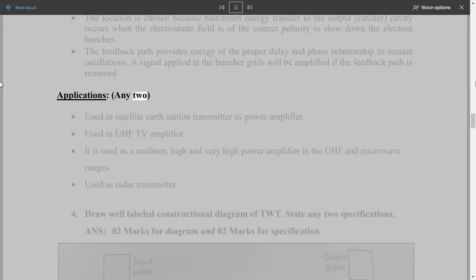The buncher grids are connected to a cavity resonator that superimposes an AC potential on the DC voltage. AC potentials are produced by oscillations within the cavity that begin spontaneously when the tube is energized. The initial oscillations are caused by random fields and circuit imbalances that are present when the circuit is energized. The oscillations within the cavity produce an oscillating electrostatic field between the buncher grids that is at the same frequency as the natural frequency of the cavity. The direction of the field changes with the frequency of the cavity. Used in Satellite Earth Station Transmitter as Power Amplifier. Used in UHF TV Amplifier. It is used as a medium, high and very high power amplifier in the UHF and microwave ranges. Used as Radar Transmitter.